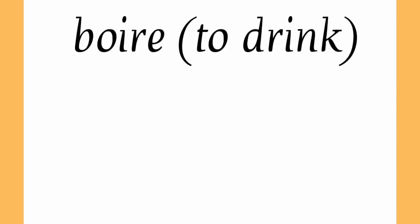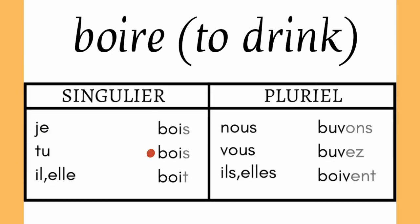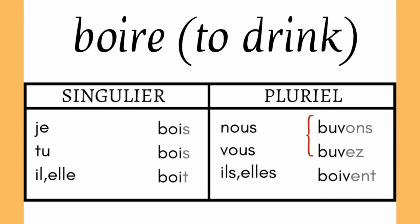The next verb we are going to cover is 'boire', which means 'to drink'. Let's see how it is conjugated: je bois, tu bois, il boit, elle boit, nous buvons, vous buvez, ils boivent, elles boivent. With je, tu and il/elle, the radical is b-o-i and the endings are -s, -s and -t. With nous and vous, the radical changes to b-u-v, with endings -ons and -ez. With ils plural, the radical changes again to b-o-i-v and the ending is -ent.